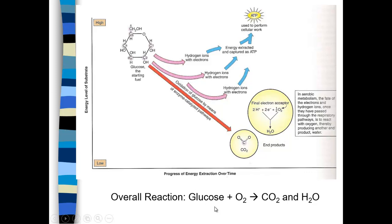We can follow the redox reaction because glucose (C6H12O6) has hydrogen in it. Glucose is oxidized to carbon dioxide, and then oxygen is reduced to water — we see the hydrogen move from glucose to oxygen. The formula is: C6H12O6 + O2 → CO2 + H2O.